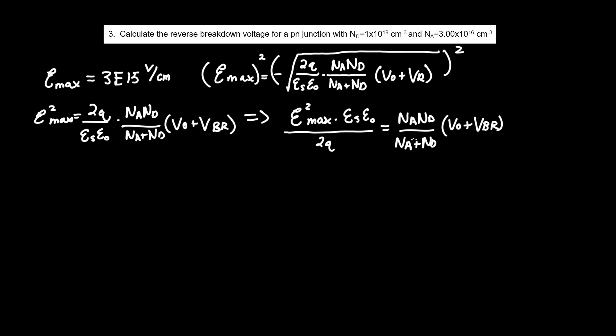The best thing we can do is divide both sides by NA ND over NA plus ND. So if you divide the right-hand side by that, it becomes 1. And if you divide the left-hand side by this, you take the reciprocal of it. So this ends up turning into epsilon squared max times epsilon S epsilon naught over 2Q times NA plus ND over NA times ND. Make sure to flip those signs. All of that equals V0 plus VBR.